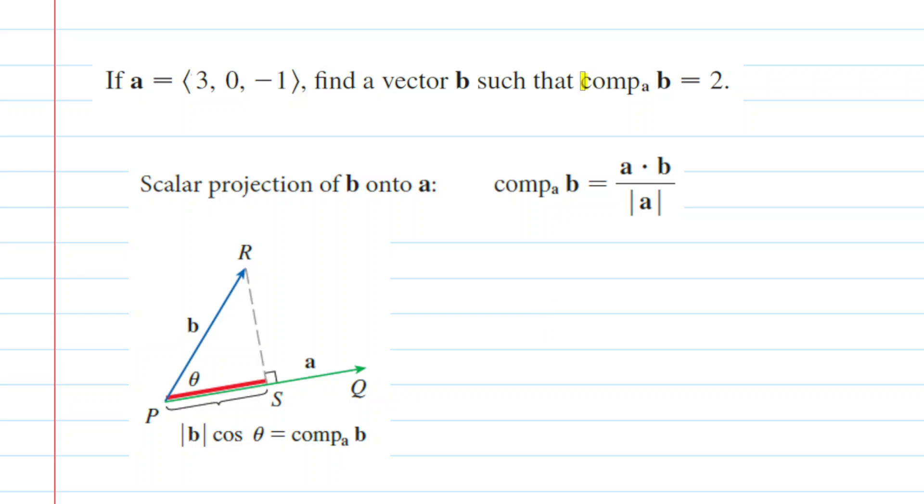In this question, we are told that the scalar projection of vector B onto vector A is equal to 2. We've learned that the equation for this scalar projection of B onto A is given by this quantity, or this equation here.